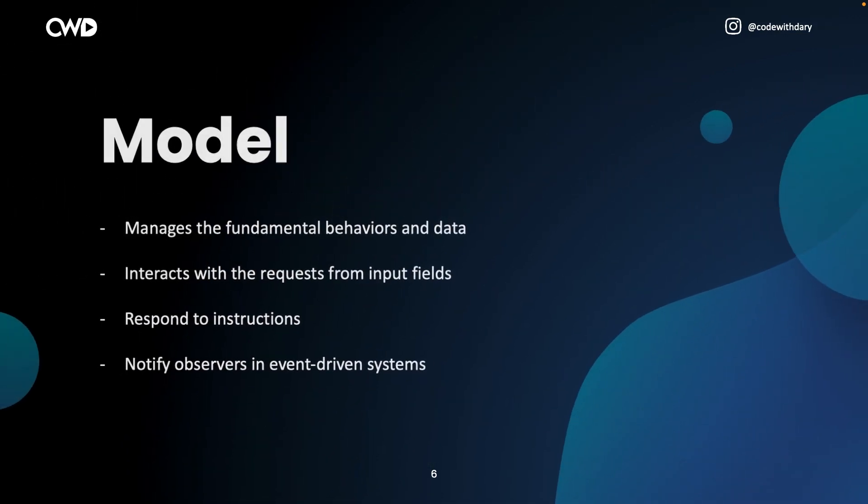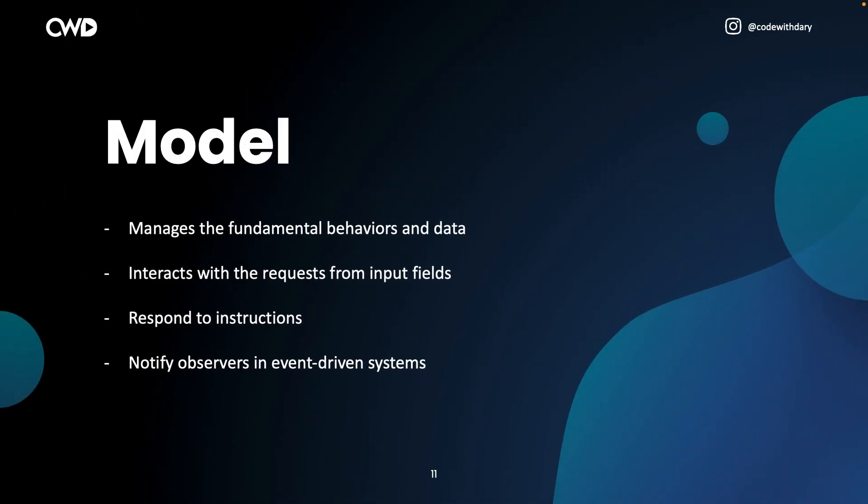The first one is the M — the model. The model layer manages the fundamental behaviors and data of the application. It can interact with a request from user input fields, respond to instructions, and even notify observers in event-driven systems.